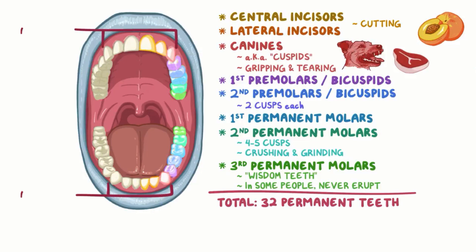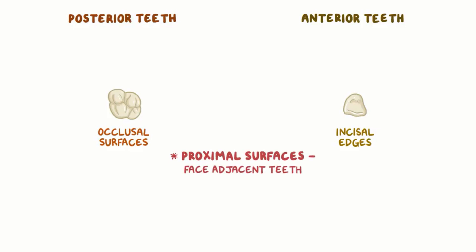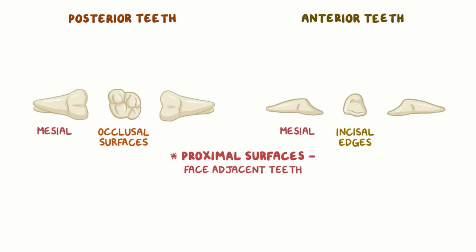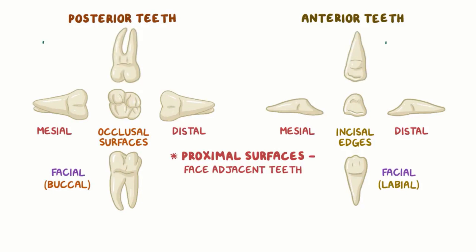The front teeth from canine to canine are called anterior teeth, and the rest are called the posterior teeth. Each tooth has five surfaces that are named based on their location and function. Each tooth has one chewing surface. The chewing surface of posterior teeth are called occlusal surfaces, and the cutting edges of anterior teeth are called the incisal edges. Each tooth has two proximal surfaces, which are surfaces that face adjacent teeth. Proximal surfaces are mesial when they are close to the midline of the mouth, and distal when they are away from the midline. Tooth surfaces next to the face — the ones resting next to the cheek or lips — on the upper and lower teeth are called facial surfaces.